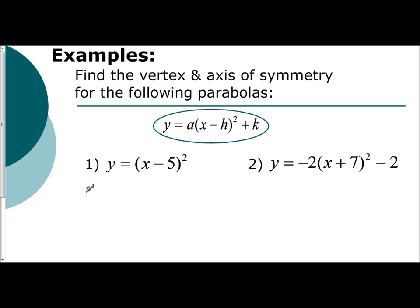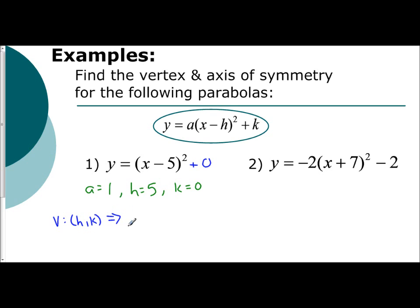A is the coefficient to your parentheses — what number do we see out here? There's no number there, so that is the number 1. Now I'm going to jump right to h — it's the opposite of what I see, so it's going to be a positive 5, because I'm subtracting a positive 5. And k is what you are adding or subtracting outside of the parentheses — there's no number out here, so really that's a plus 0, meaning my k value is 0. So the vertex is the coordinate h, k: h is 5 and k is 0, so the vertex is (5, 0). The axis of symmetry is x equals h, so x equals 5.